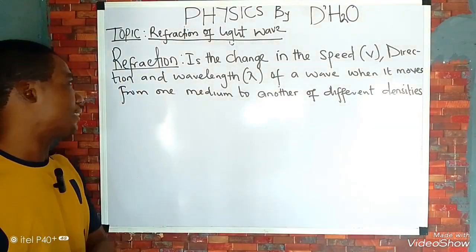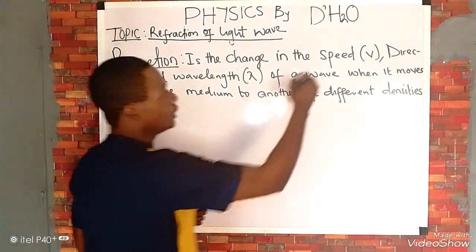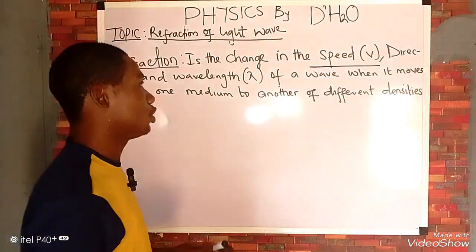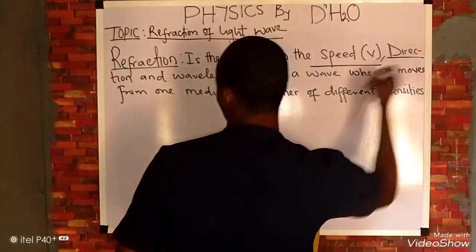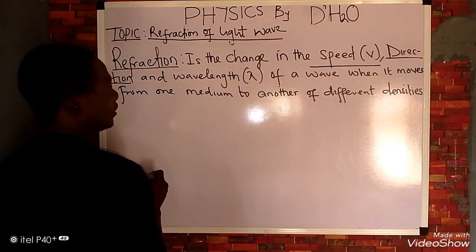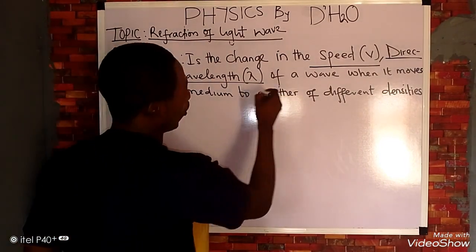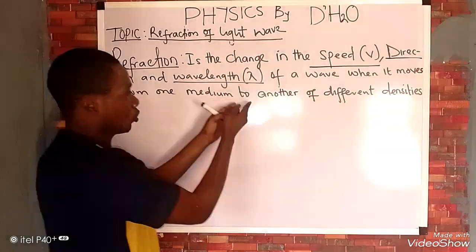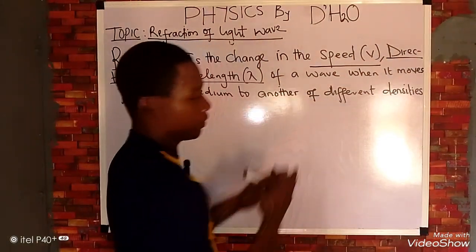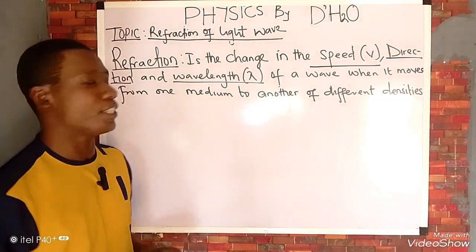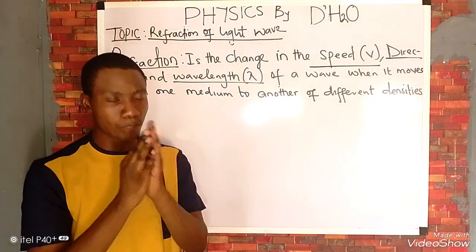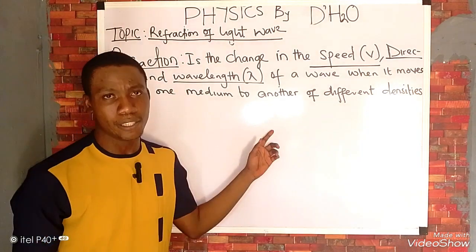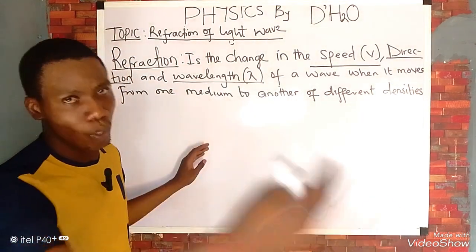Refraction is the change in speed, direction, and the wavelength of a wave. This simply means that if your wave moves from one medium to another, as long as the media do not have the same densities, refraction is bound to occur.